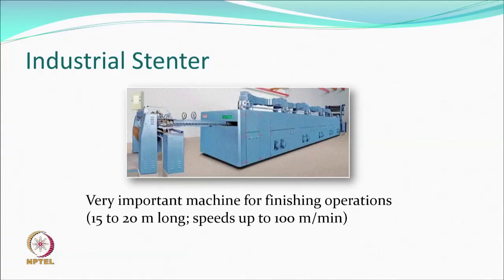Humidity control is critical in the stenter chambers. If humidity becomes too high, the rate of evaporation drops. Fresh air must continuously come in and hot moist air must go out. The humidity of the exhaust is measured to determine whether to draw in more fresh air or slow it down. Temperature control and moisture monitoring are also essential. An industrial stenter is a long machine occupying large floor space and is very important from the finishing point of view.